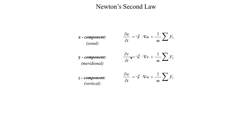If we look at the y-component — how the meridional component of the wind changes at a fixed point in space — we get a similar term, except instead of u on the right-hand side of the gradient symbol we have lowercase v, and F_x becomes F_y representing forces in the y direction. How the meridional wind changes at a fixed point equals the momentum advection of the meridional component — the tendency for the wind to advect meridional momentum from one location to another — plus all other forces acting in the y direction. Finally, in the vertical (z) direction, the change in vertical wind at a fixed point equals the momentum advection term for the vertical, plus all forces acting in the z direction.